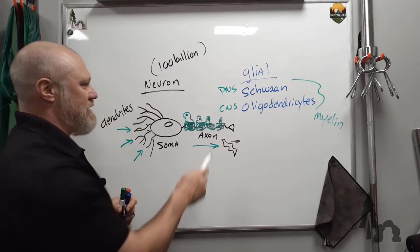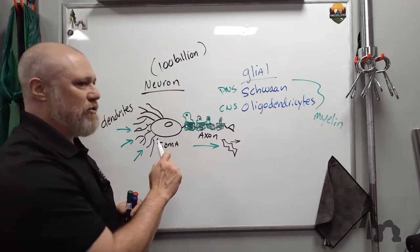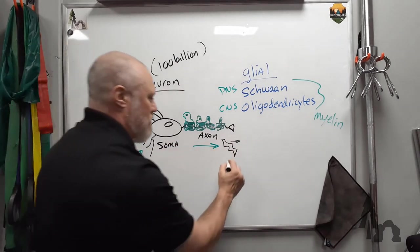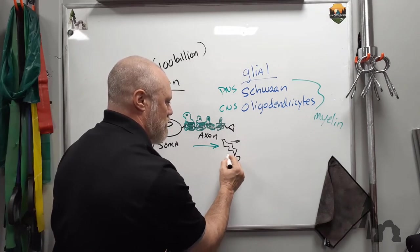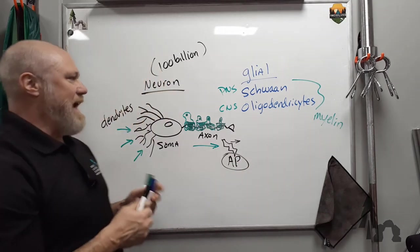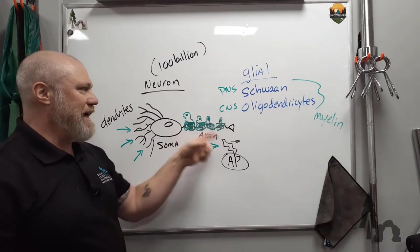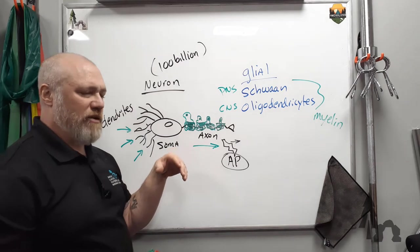One of the main benefits is it provides increased conduction velocity. So these little signals that are going down, which are called action potentials, I'll just call them AP for here, the action potentials in a larger axon, bigger diameter and really heavily myelinated, can travel up to 100 meters a second.